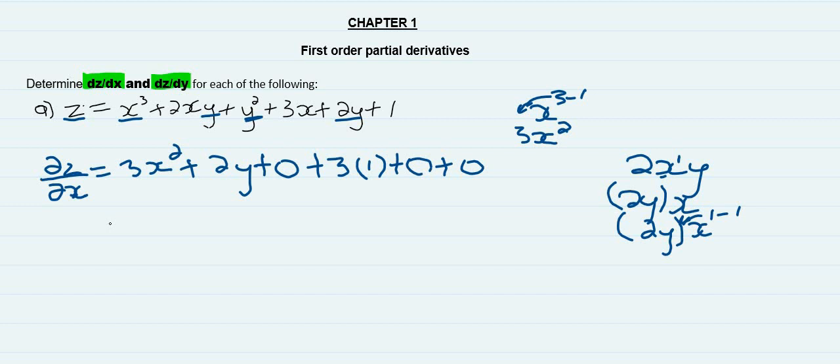In this one we see X to the power of 1. When you differentiate, you get 1. And this one also, no X, so it's 0. And the constant, it also becomes 0. When we simplify, we're left with 3X squared plus 2Y plus 3.